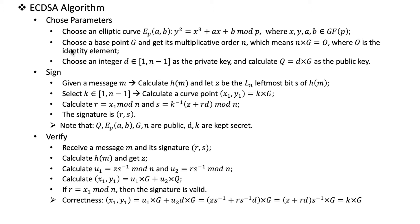Then we choose a base point G on that elliptic curve and get its multiplicative order n, which means n times G equals O. This operation is scalar multiplication — we use an integer times a point and the result is also a point. If we represent it in coordinates, we have two numbers. O here is the identity element, which is the point at infinity on the elliptic curve. You may need to check what a finite field is and how scalar multiplication works.